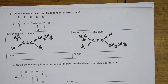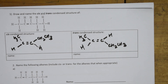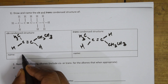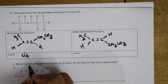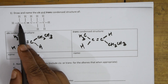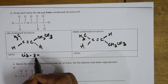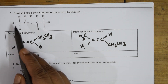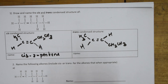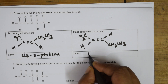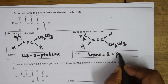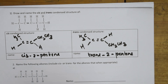Now I need to write the name of this compound. This is the cis isomer, so write 'cis'. Hyphen. The double bond is at the second carbon. How many carbons totally? One, two, three, four, five — so the parent chain is pentene. This is cis-2-pentene. Now for the trans form, name it: trans-2-pentene. Hope the concept is clear, students.